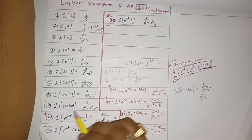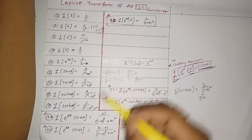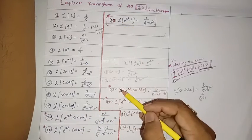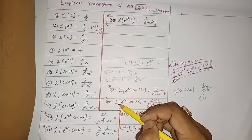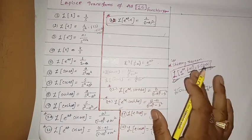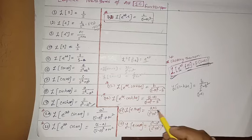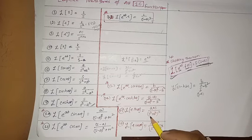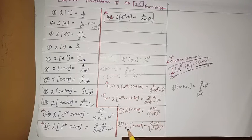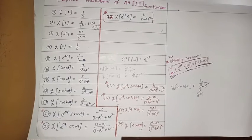So you need to remember up to the 9th function; the 10th through 14th can be found using the shifting theorem. The 15th function t·sin(at) has Laplace transform 2as/(s²+a²)², and the 16th function t·cos(at) has Laplace transform (s²-a²)/(s²+a²)².